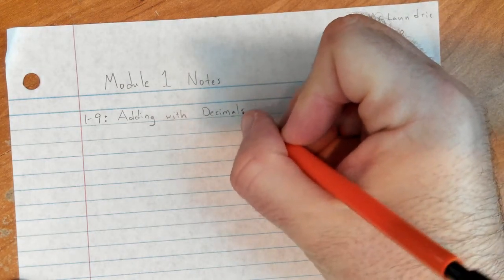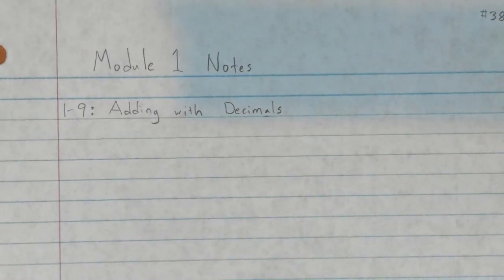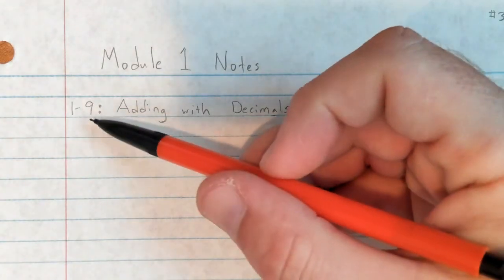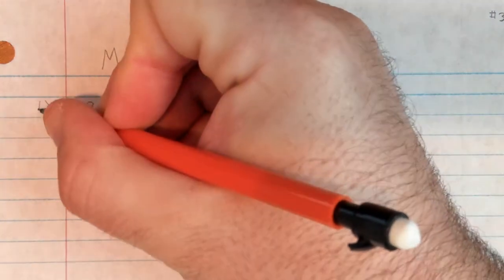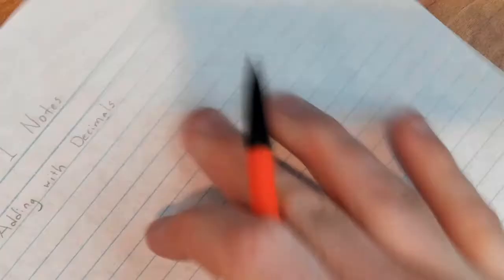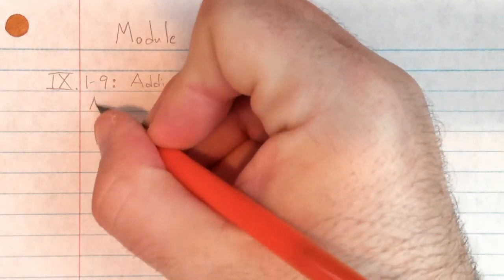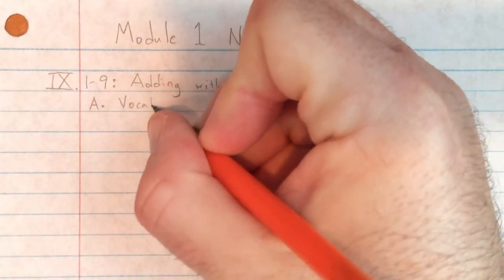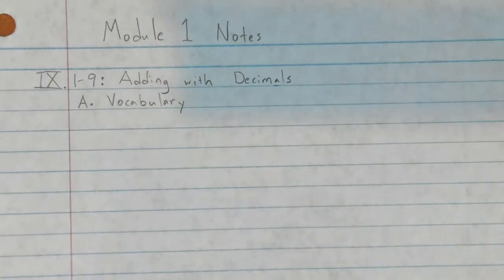Adding with decimals is a lot like adding with whole numbers — we just have to be very careful with that decimal point and the decimal places. Since this is lesson 9, we'll put a Roman numeral 9, which is one less than 10.